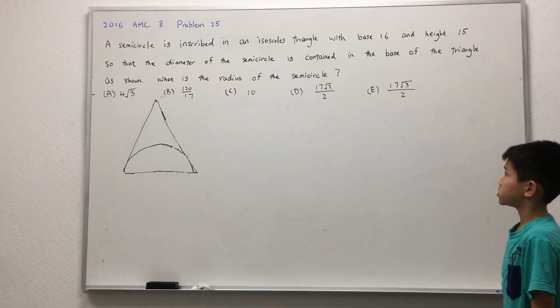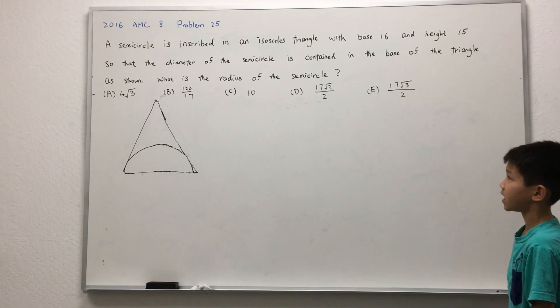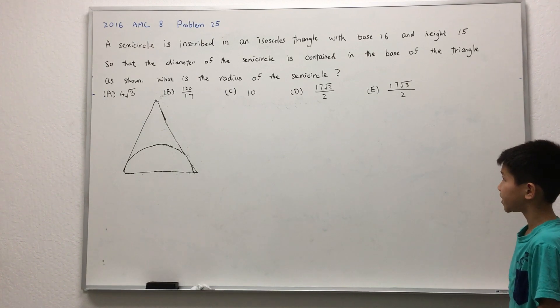A semicircle is inscribed in an isosceles triangle with base 16 and height 15, so that the diameter of the semicircle is contained in the base of the triangle as shown. What is the radius of the semicircle?